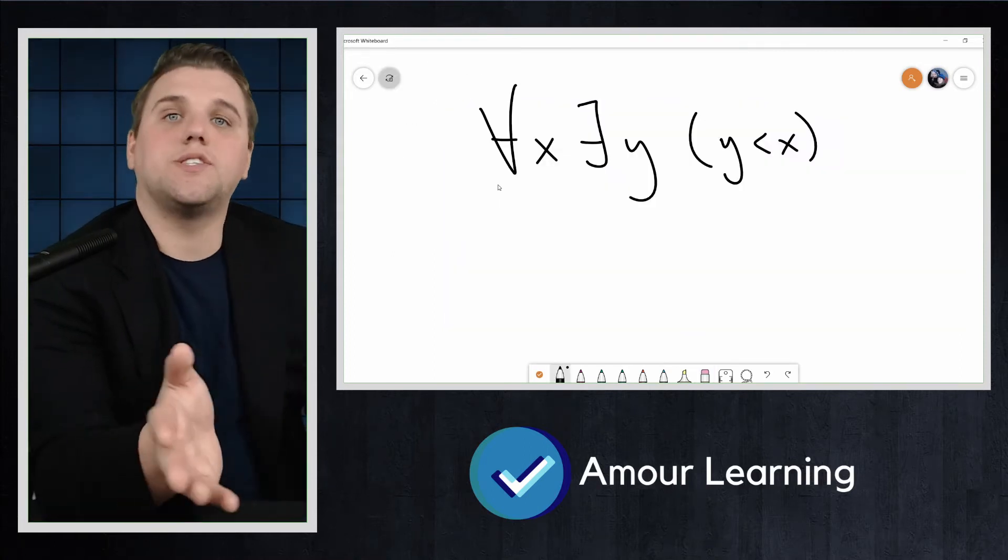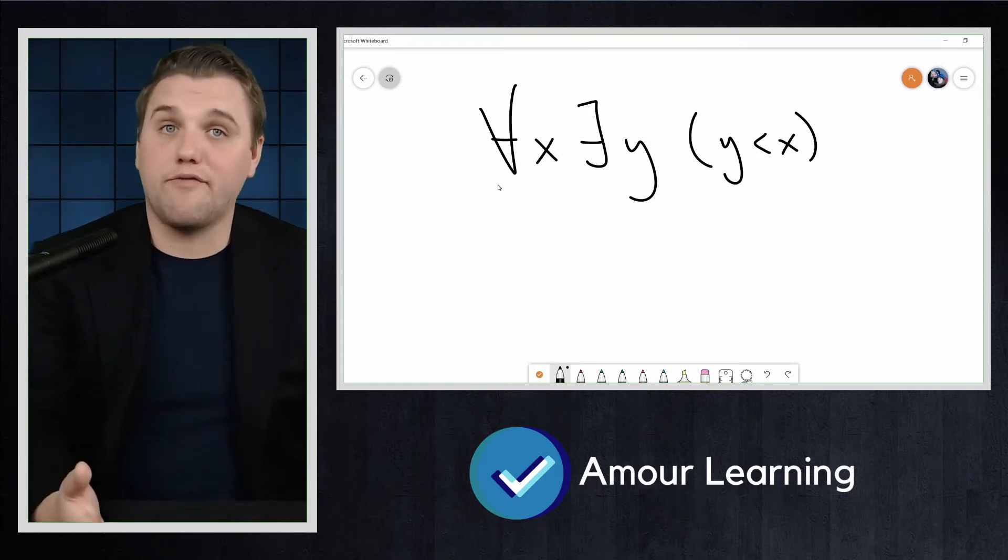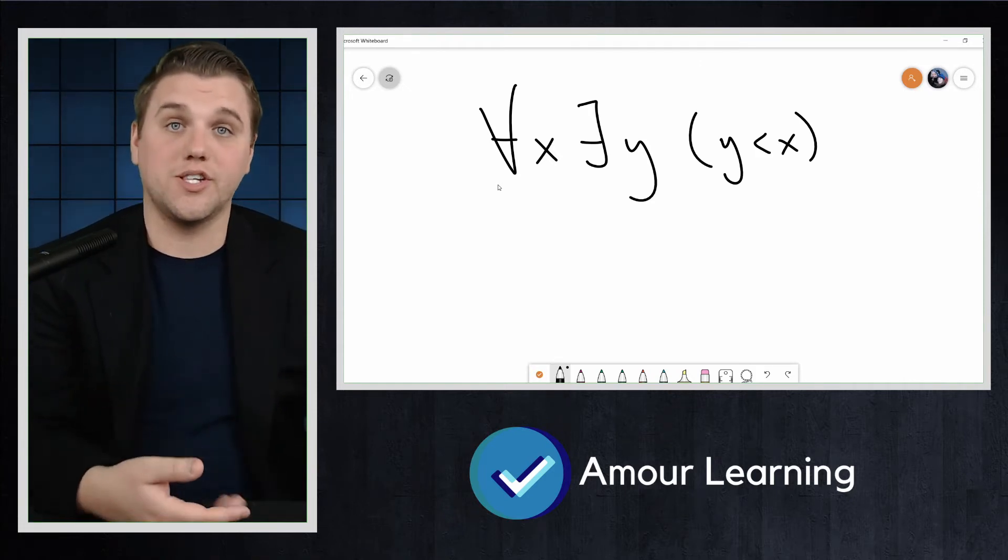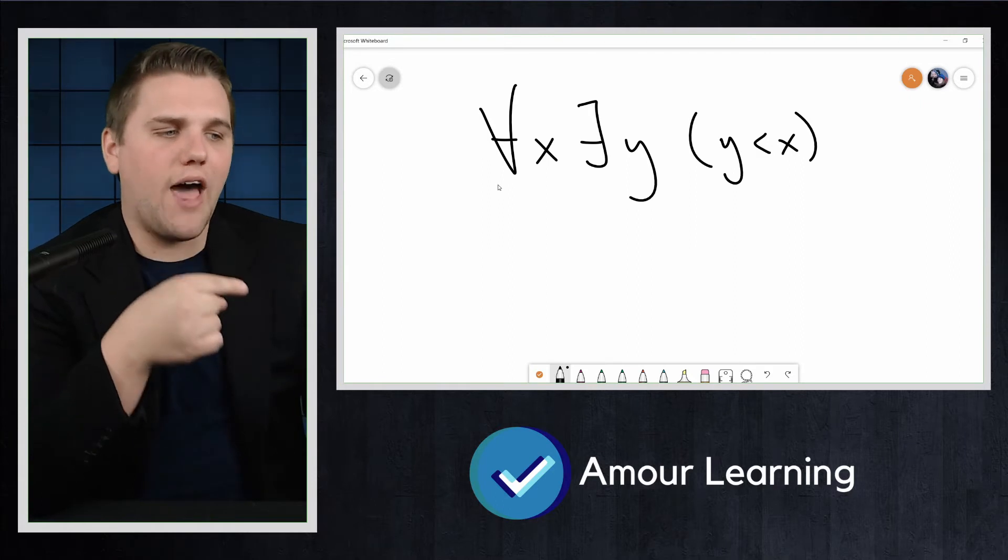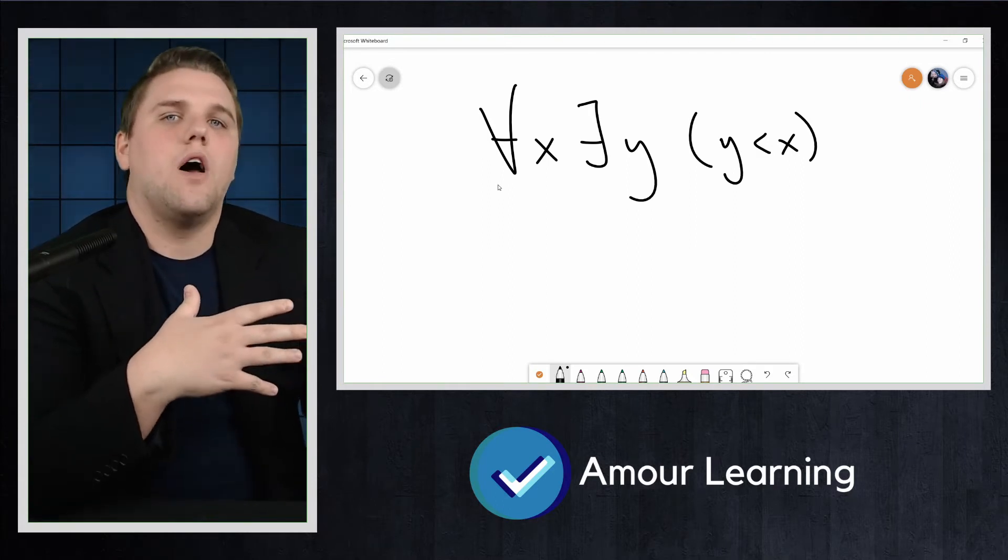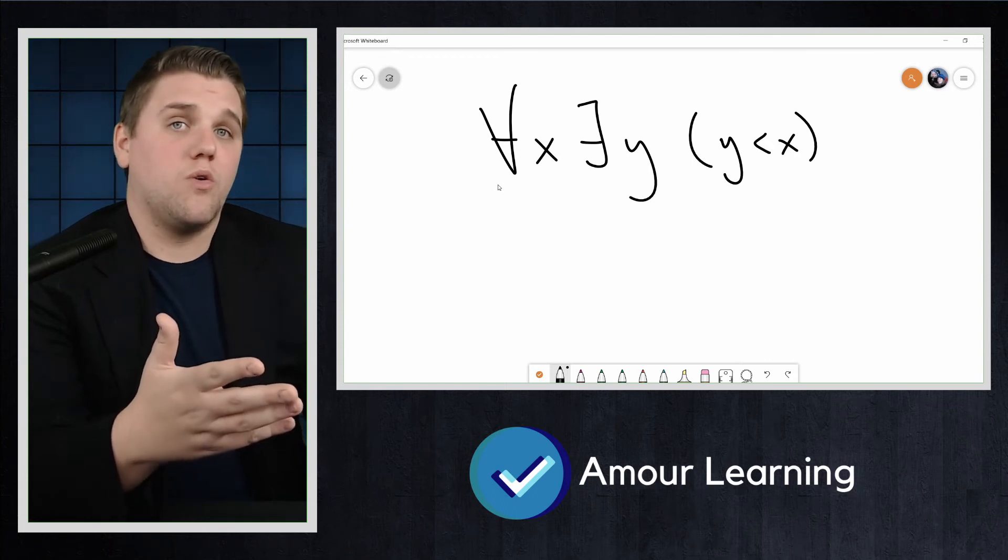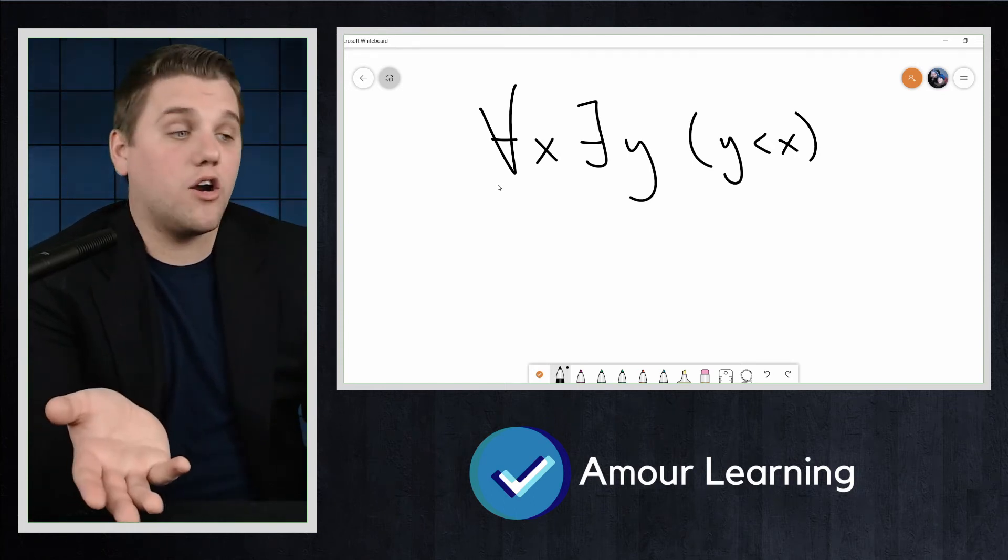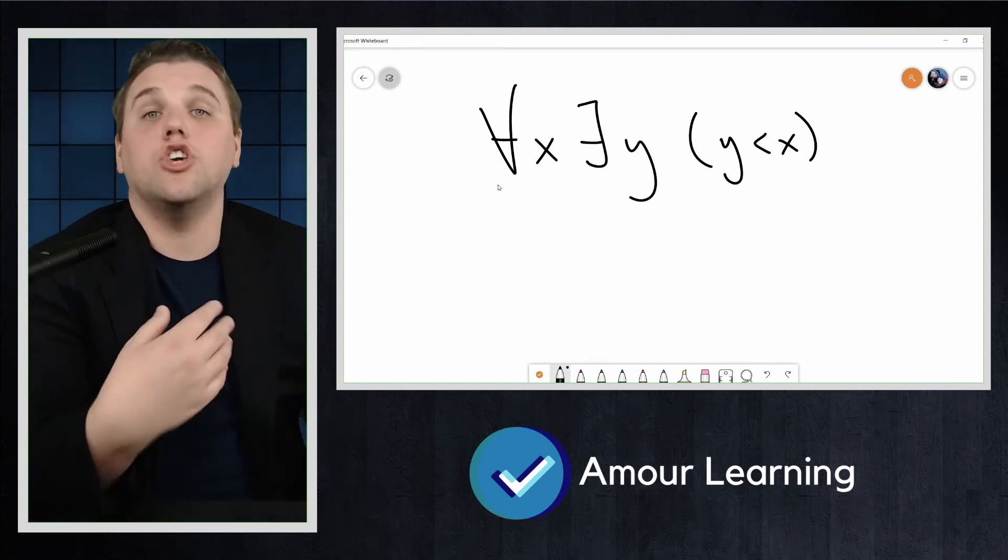As with all mathematical statements, we would like to decide whether quantified statements are true or false. Consider the statement, for all X, there exists a Y such that Y is less than X. Is this true? Well, the answer depends on what our domain of discourse is or our universe.